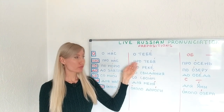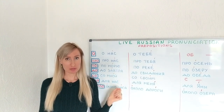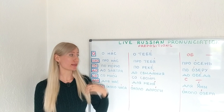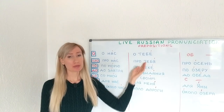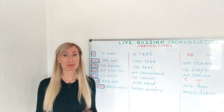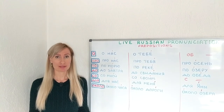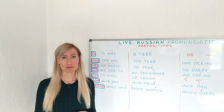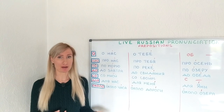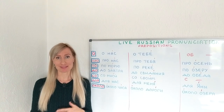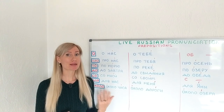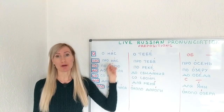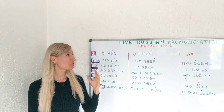When it's further from the stressed syllable it sounds like this: ПРА ТЕБЯ — about you. Let's compare: ПРА НАС versus ПРА ТЕБЯ. You notice that prepositions are not stressed at all — the following word is stressed and the preposition is unstressed.